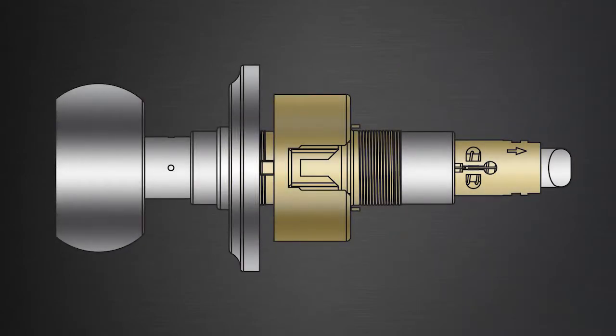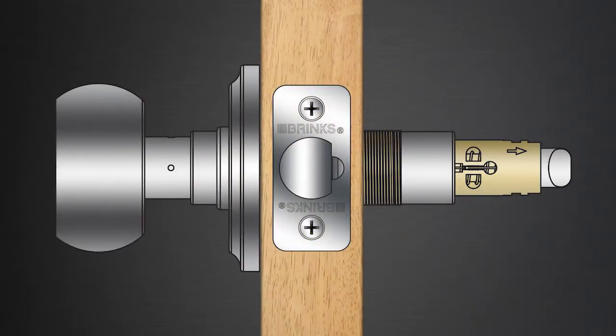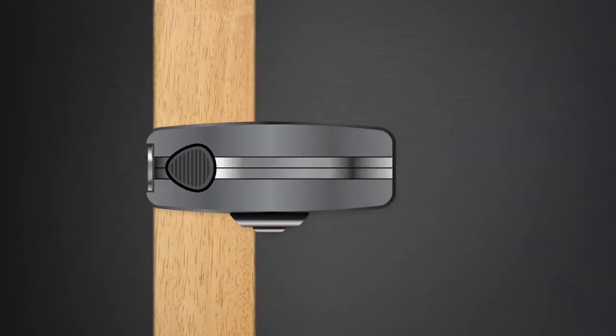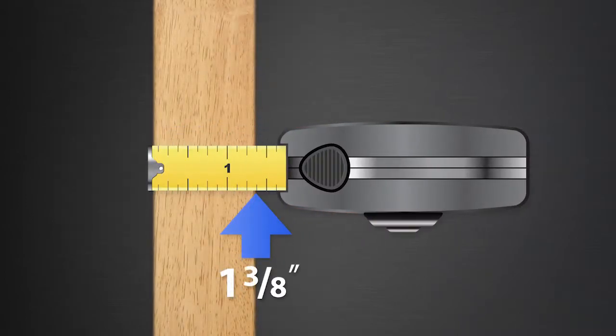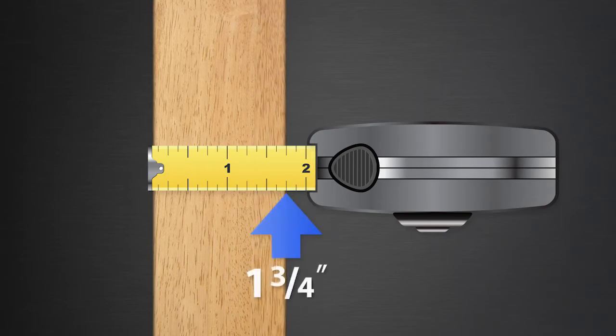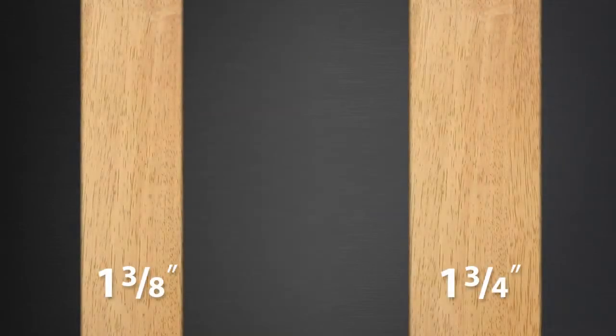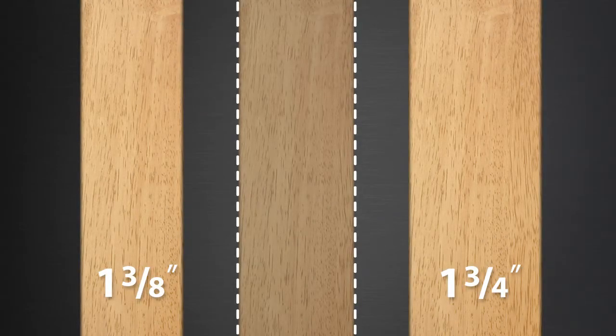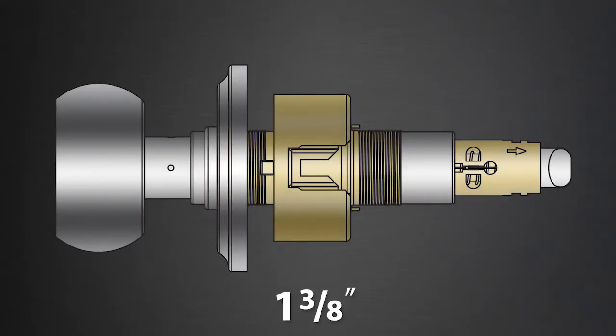Next, you'll need to adjust the main lock body for the door thickness. Brink's push-pull-rotate knobs can be installed on doors from 1 3/8 to 1 3/4 inch thick. If your door is between those two measurements, select the one closest to the thickness of your door.